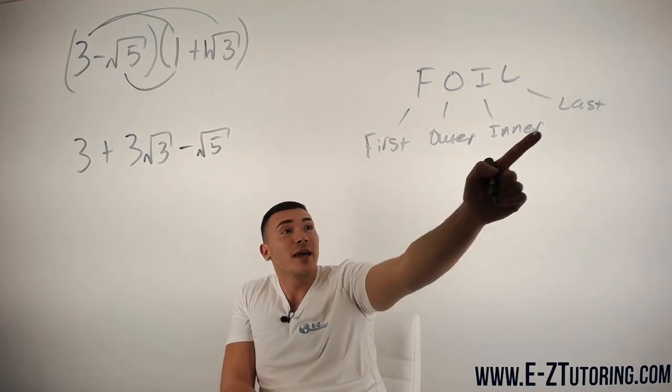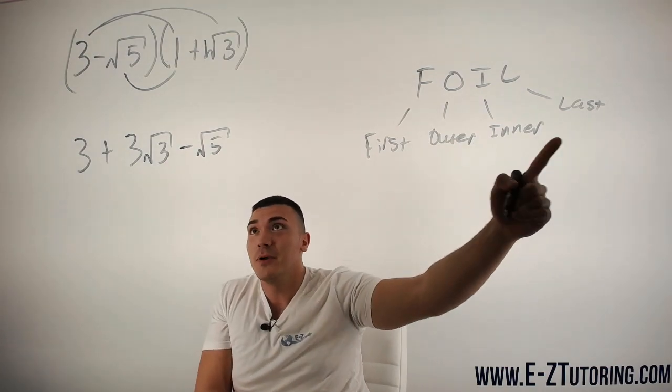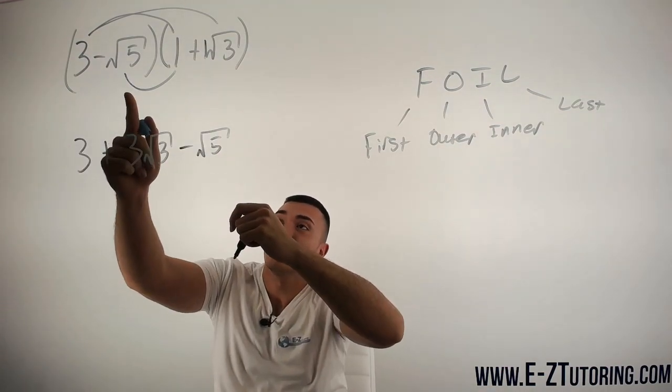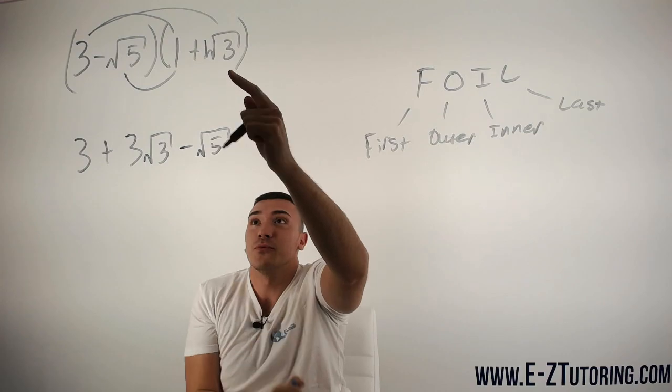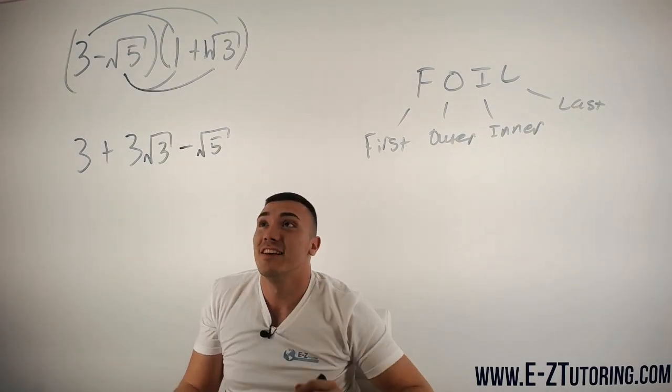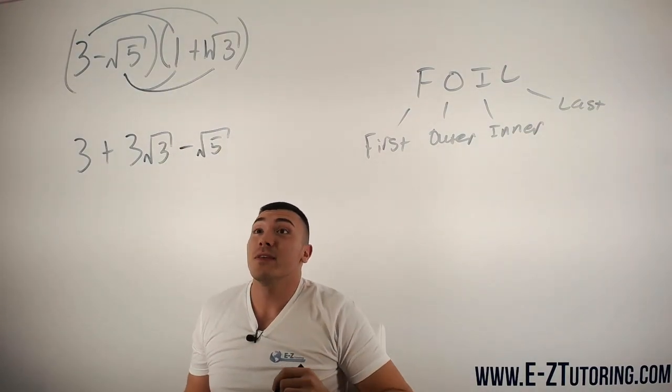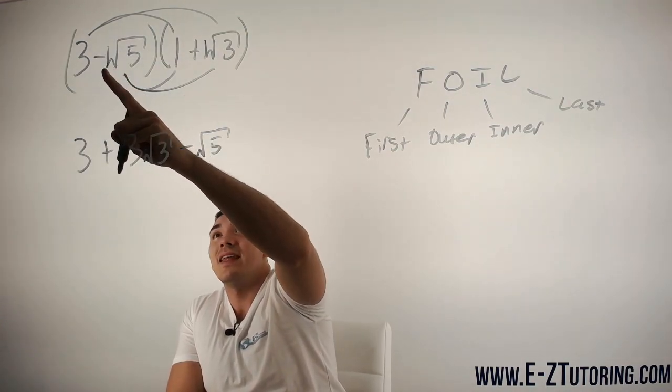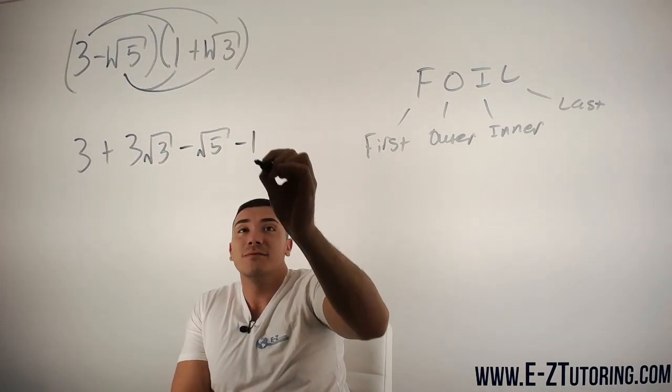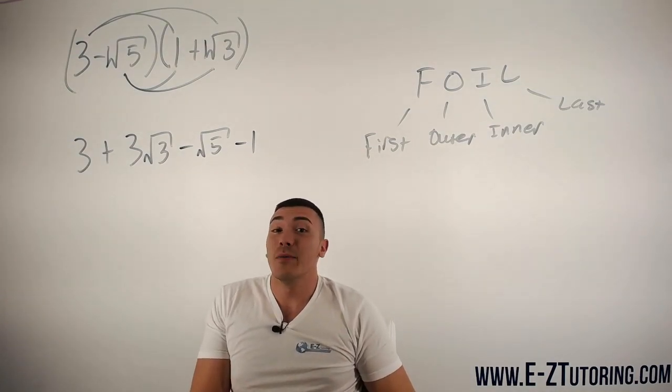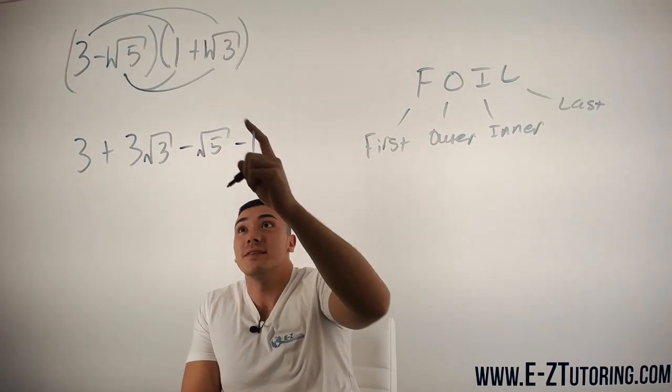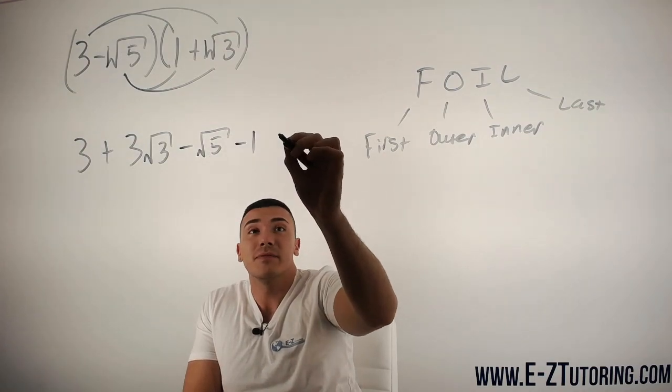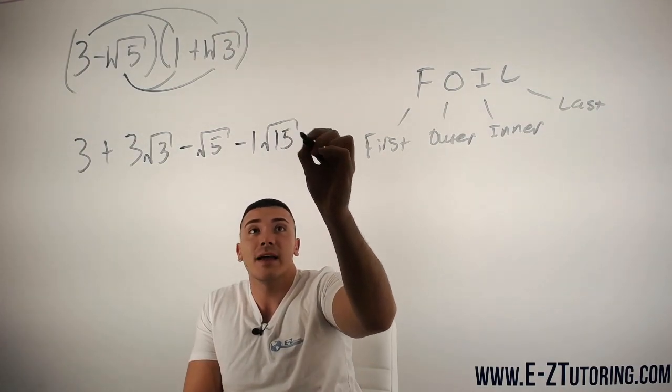Then we got to multiply the last terms of each binomial. The last term of this one is negative root 5, the last one of this one is root 3. We multiply these. So we multiply the numbers out front first. This is really like negative 1. Negative 1 times 1 is negative 1. Then we multiply whatever is inside the square roots, 5 times 3 gives us 15 inside of a square root.